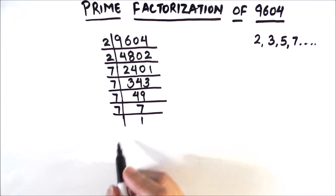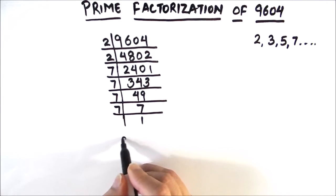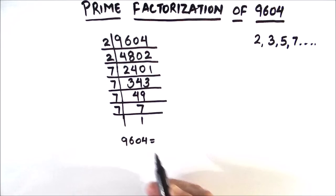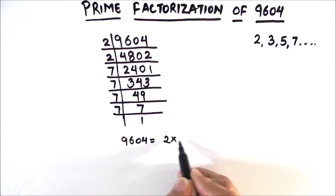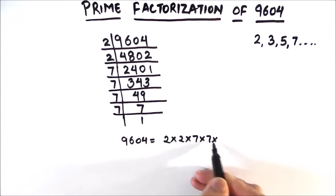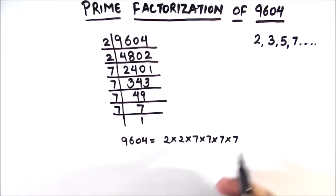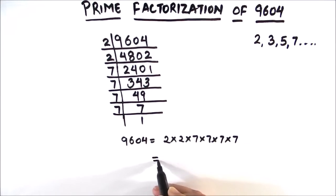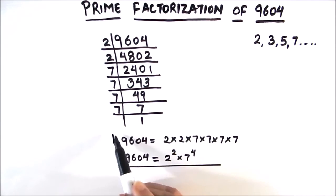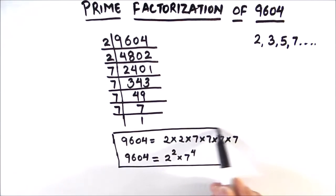Now the number is fully divided. We can write 9604 as the product of primes: 2 × 2 × 7 × 7 × 7 × 7. In exponent form, we can write it as 2² × 7⁴. So these are the prime factors of 9604, and this is how we do the prime factorization of any number.